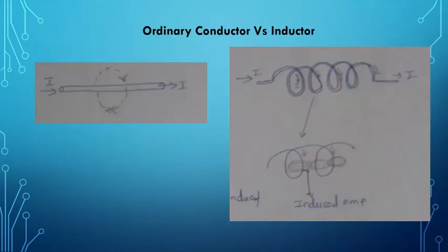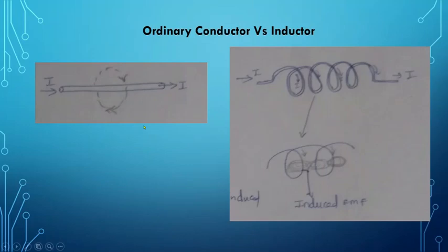Ordinary conductor versus inductor. Looking at this picture, we have an ordinary conductor which is a straight copper conductor. Whenever current flows through the conductor there is a magnetic field — flux lines — around the conductor. The direction of the flux lines around the conductor can be found using the thumb rule. If you take a basic conductor and wind it like a coil, that is known as an inductor.